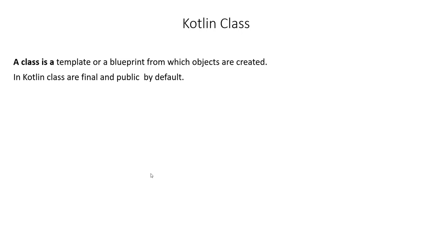Let us continue with our lesson and today let's learn about Kotlin classes. A class is a template or a blueprint from which objects are created. The object here means any object — like a TV, a car, or a dog. In the real world we can map objects to anything we can see. The classes we create in Kotlin can be mapped with real world objects.